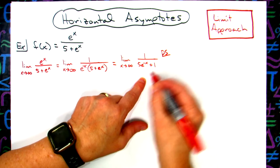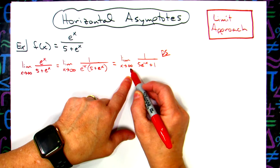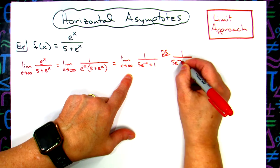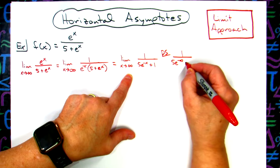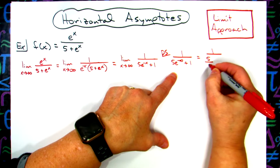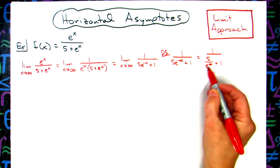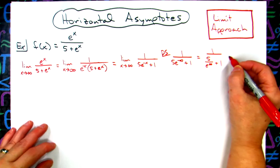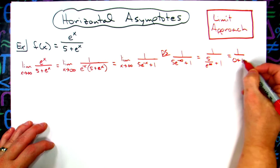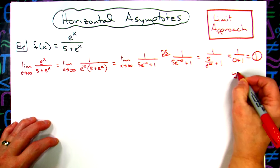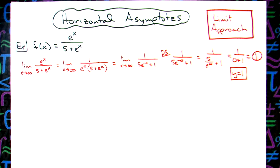Now we're going to do a direct substitution. x is approaching infinity, so it's getting infinitely large. We'll have 1 over 5e to the negative x — which approaches 0, since e to the negative infinity is 5 over e to the positive infinity — plus 1. Since that goes to 0, we get 1 over 0 plus 1, which is 1 over 1, giving us 1. So y equals 1 is one of our horizontal asymptotes.